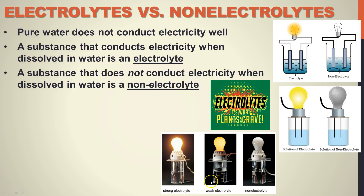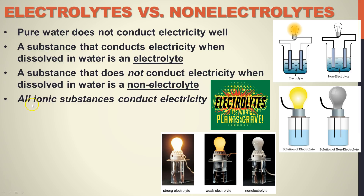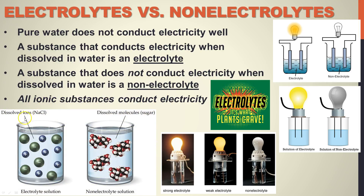We also have weak electrolytes — kind of intermediate. With those, you get a little bit of light through the bulb, but not the full amount. All ionic substances will conduct electricity. If we dissolve salt in water, it dissociates into positive sodium cations and negative chlorine anions, which conduct electricity — electrons can flow easily through the charged solution. However, if you dissolved sugar in water, nothing would happen. Sugar does not dissociate, electricity will not flow, and we call that a non-electrolyte.